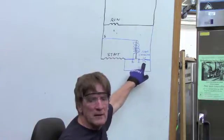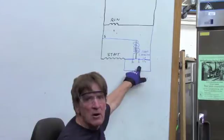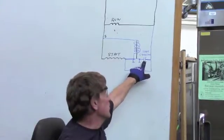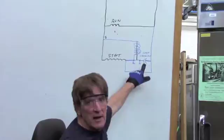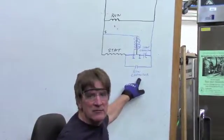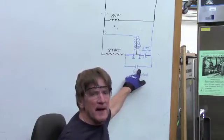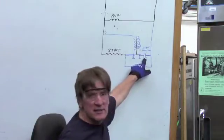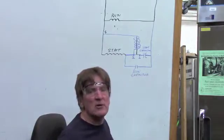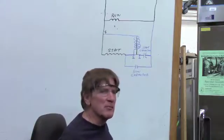When I get a closure between terminals two and one on the potential relay, I've got both the start capacitor and the run capacitor. These are additive, so the capacitance of this capacitor and the capacitance of this add together for the total capacitance or provide me more torque to get this motor moving in the proper direction.